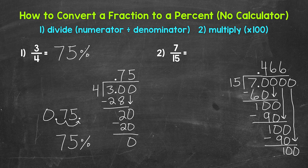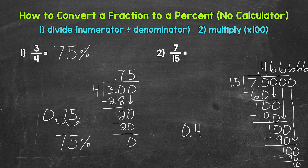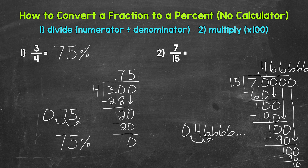We end up with 100 again — 100 divided by 15, how many whole groups of 15 in 100? Well, 6. 6 times 15 is 90. Subtract: 100 minus 90 gives us 10 again. Those 6s are going to continue forever. So I'm going to write the decimal off to the side: 0.46666... and these continue on — we have a repeating decimal. We have our decimal, so we need to multiply by 100. Let's move the decimal once, twice to the right. So we end up with 46.6 repeating percent.